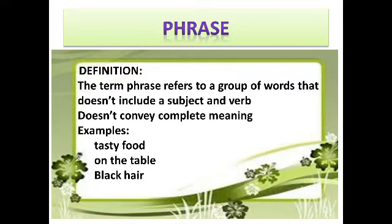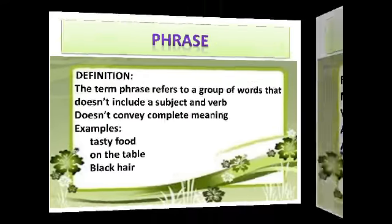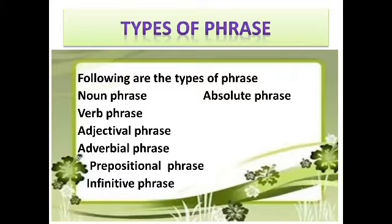Examples are: tasty food, on the table, black hair. Now, types of phrase. Following are the types of phrase: noun phrase, verb phrase, adjectival phrase, adverbial phrase, preposition phrase, infinitive phrase, and absolute phrase. Now I will explain one by one.